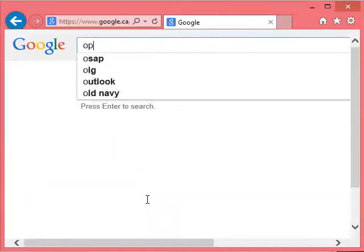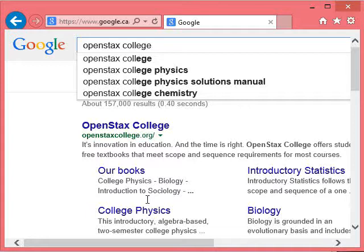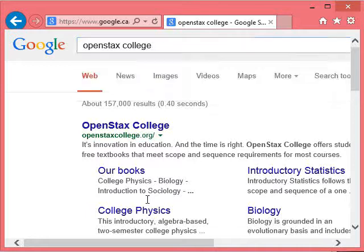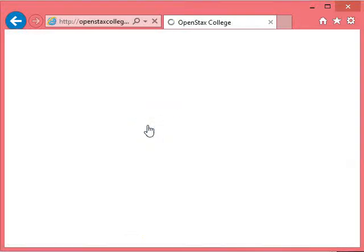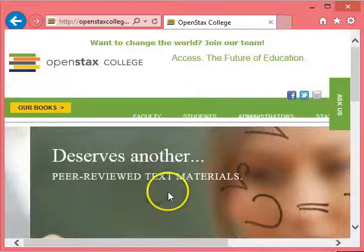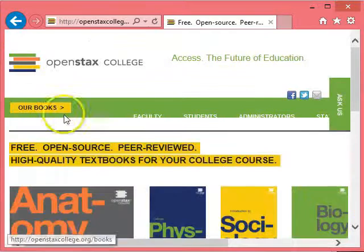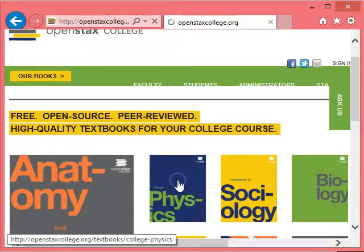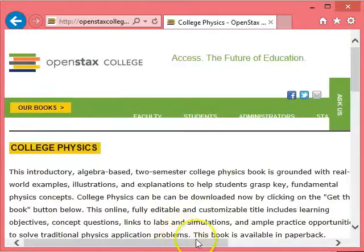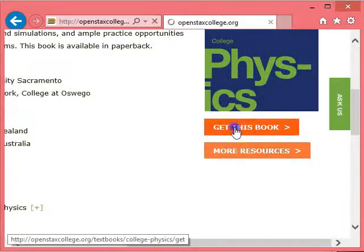So if you type openstax, S-T-A-X, college on Google, you'll see openstaxcollege.org. Click on that, and this takes you to this website. Click on our books, and you should see various different books. There's physics, click on physics, and you get to college physics. Scroll to the right, down a little bit, and click get this book.